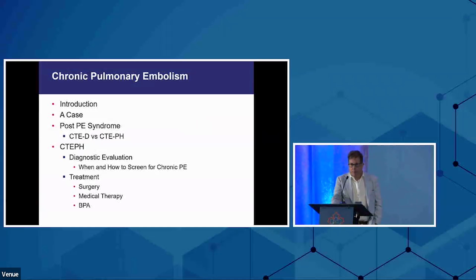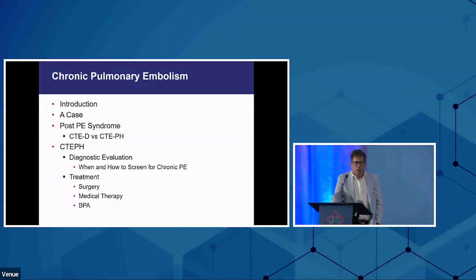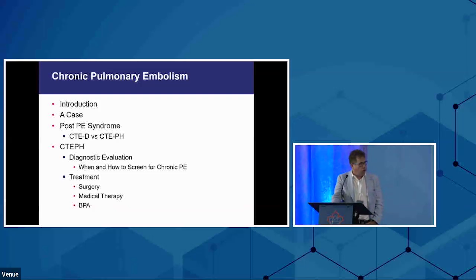I'm going to give a very brief introduction on pulmonary embolism, and then talk about a case which I think highlights many of the points I want to make. I'll talk about the relatively new concept called post-PE syndrome, and then the difference between chronic thromboembolic disease and chronic thromboembolic pulmonary hypertension. In the last section, I'll focus on the most severe form called chronic thromboembolic pulmonary hypertension, or CTEPH, and show what we can do about it and how important nuclear medicine can be in that diagnosis.